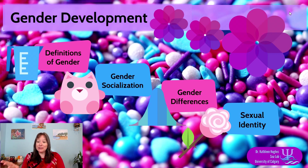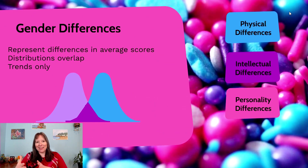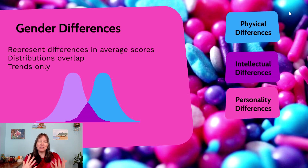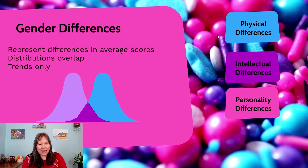We've talked about our definitions of gender and how our gender identity develops. Now we're going to talk about some developmental differences in terms of gender. It's important to understand that these differences are only talking about averages. When we say boys are different than girls, we're not saying all boys are different from all girls — we're saying the average boy is different than the average girl.